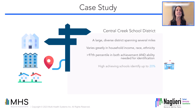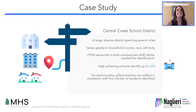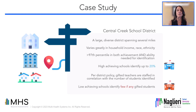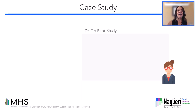In the high-achieving, non-Title I schools, up to 20 percent of the students qualify in the top three percent in both achievement and ability scores. According to Central Creek School District policy, the gifted teacher position is staffed in correlation with the number of students identified. In the district's lower-achieving Title I schools, few if any students are identified based on the district criteria. As a result, these schools do not have gifted teachers and the few gifted students they do identify don't receive any services. To address the inequities in the district, the director of gifted services, Dr. T, conducted a pilot study.